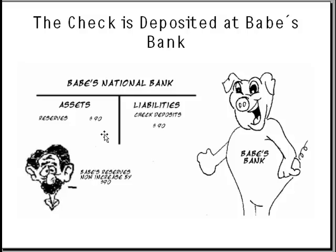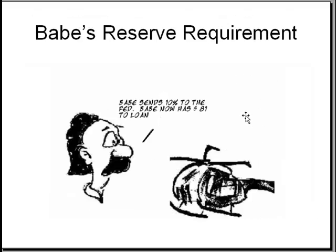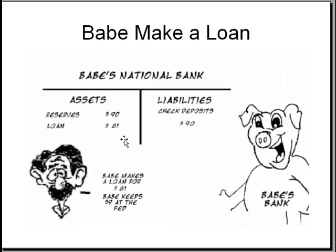Now if that customer takes the ninety dollars and deposits it at Dave's bank, then Dave's bank will list that ninety dollars as a deposit and as an asset. His reserves increased by ninety dollars. Dave's bank will have to send ten percent to the Fed — ten percent of ninety dollars is nine dollars — so Dave now has eighty-one dollars to loan.